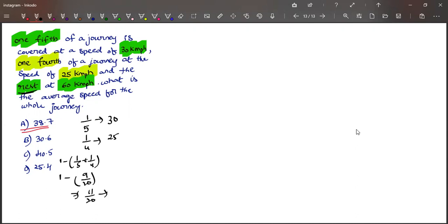Now, what were we asked? We were asked to find out the average speed. What is the formula for average speed? Average speed is equal to total distance by total time.